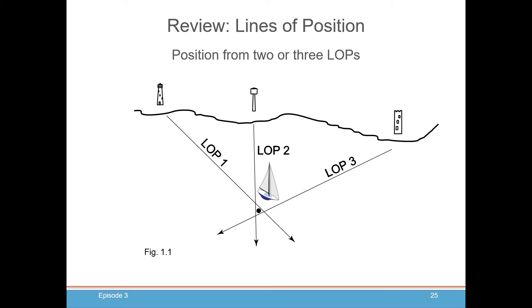Another concept from coastal navigation is lines of position. This is very important for celestial navigation because our goal is to determine where we are on earth. We'll be using celestial lines of position, which use the same concepts as coastal lines of position.